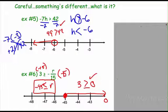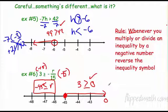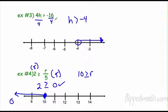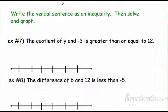Whenever you multiply or divide an inequality by a negative number, reverse the inequality symbol. Only multiplying and dividing — not adding and subtracting. Only when you actually multiply or divide by a negative. Notice: if the number you're dividing by isn't negative, like the 4 from before with negative 16, you don't switch it. It only happens when the number you're actually multiplying or dividing by is negative.